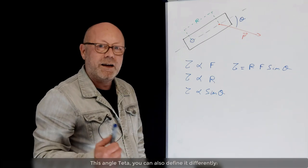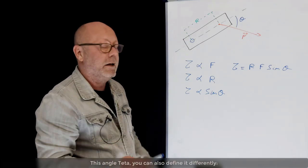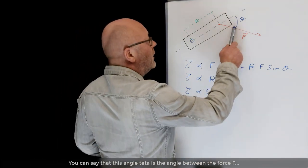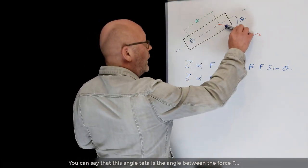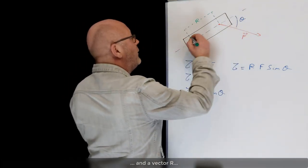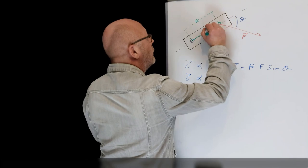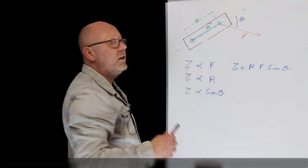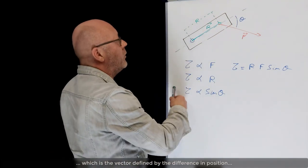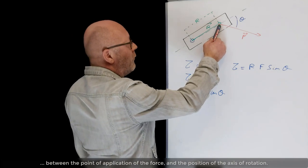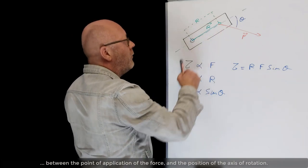This angle theta, you can also define it differently. You can say that this angle theta is the angle between the force F and a vector R, which is a vector defined by the difference of position between the point of application of the force and the position of the axis of rotation.